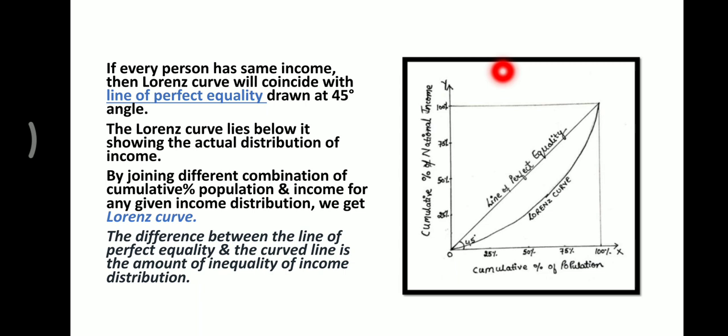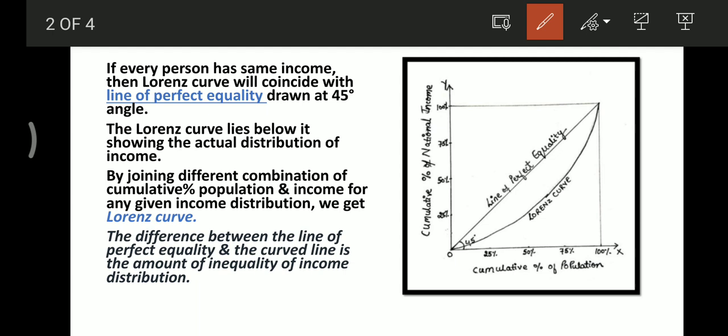In this diagram, this diagonal line at a 45-degree angle is the line of perfect equality. This means that every person has the same income — 25% of the population have 25% of the national income, 50% of the population have 50% of the national income, 75% of the population have 75% of the national income.